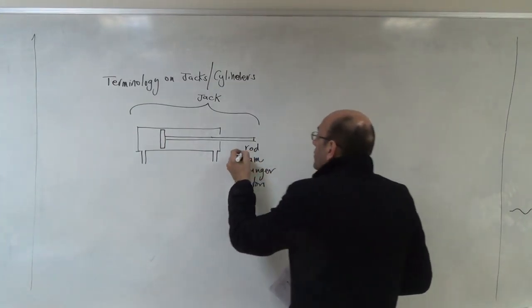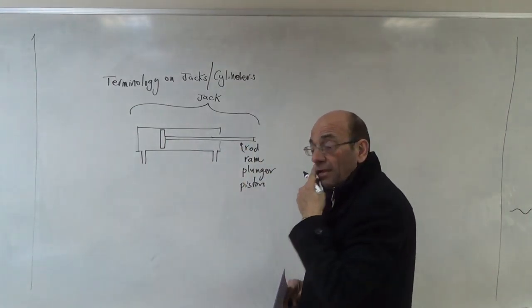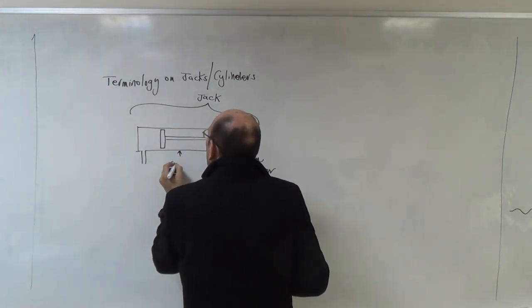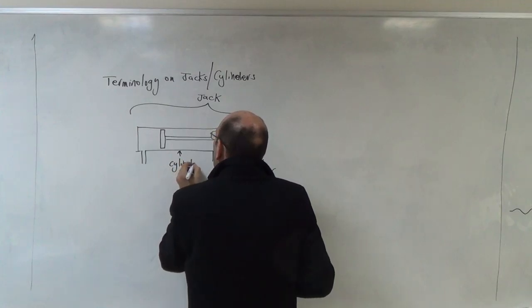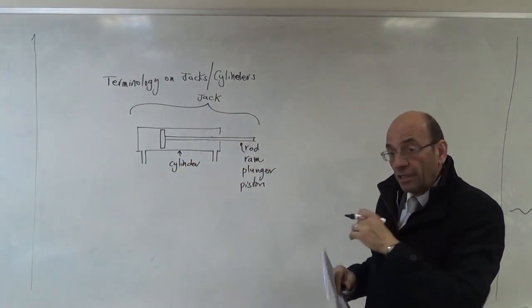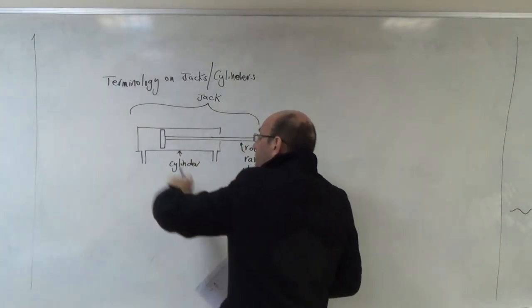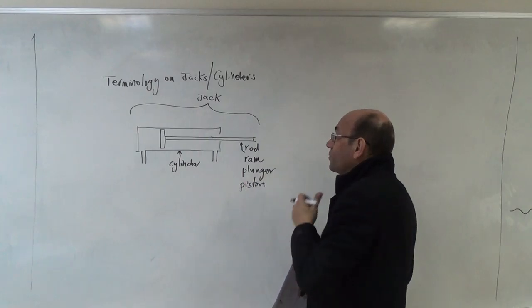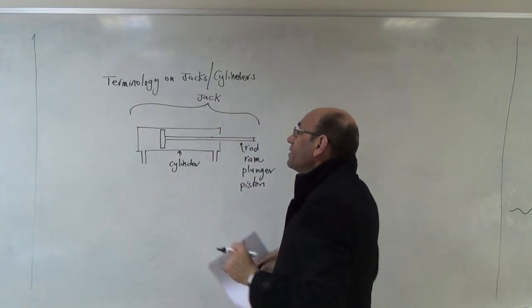This is the material here. This is the cylinder. You call this the cylinder. So if we're going to use the right terminology, this is the cylinder, this is the rod or the ram or the plunger or the piston, and all the arrangement here is called jack.